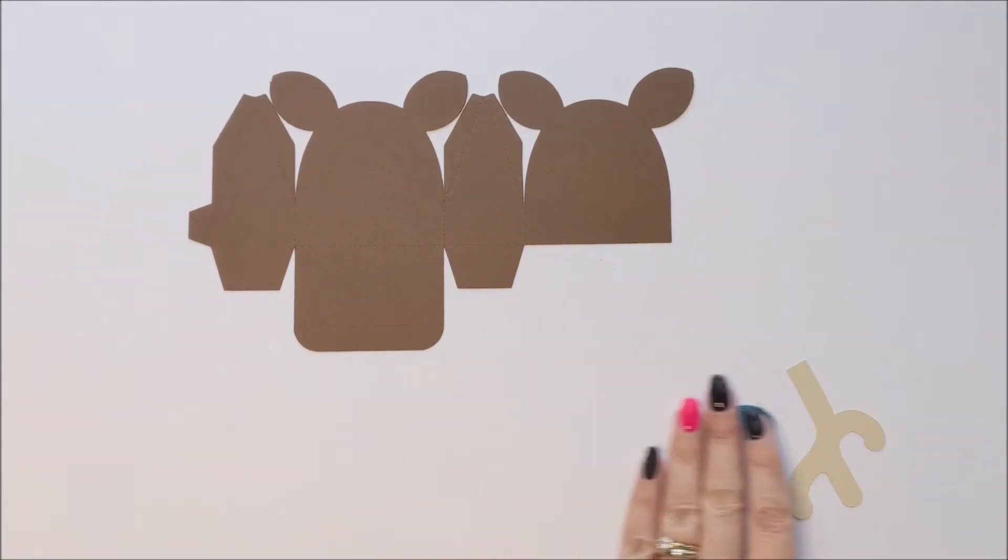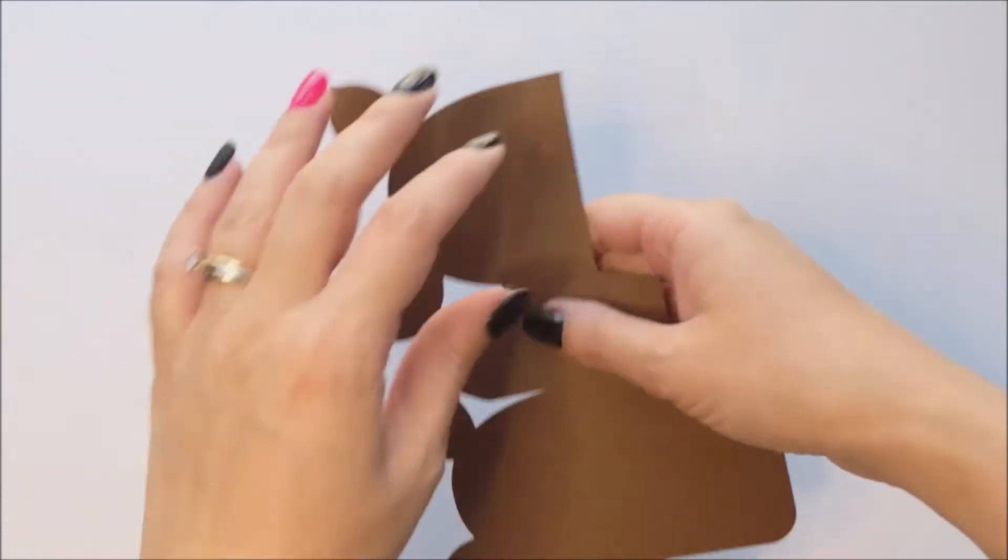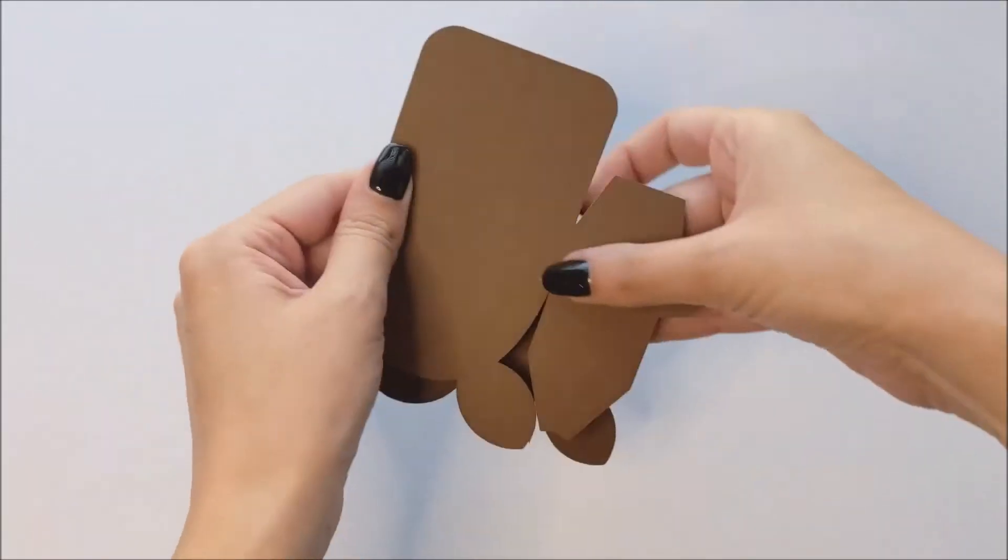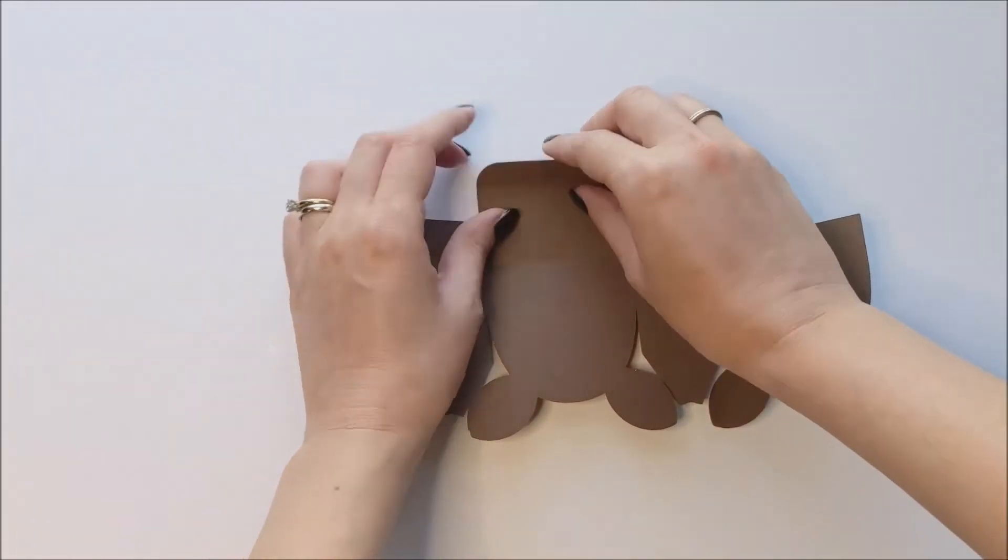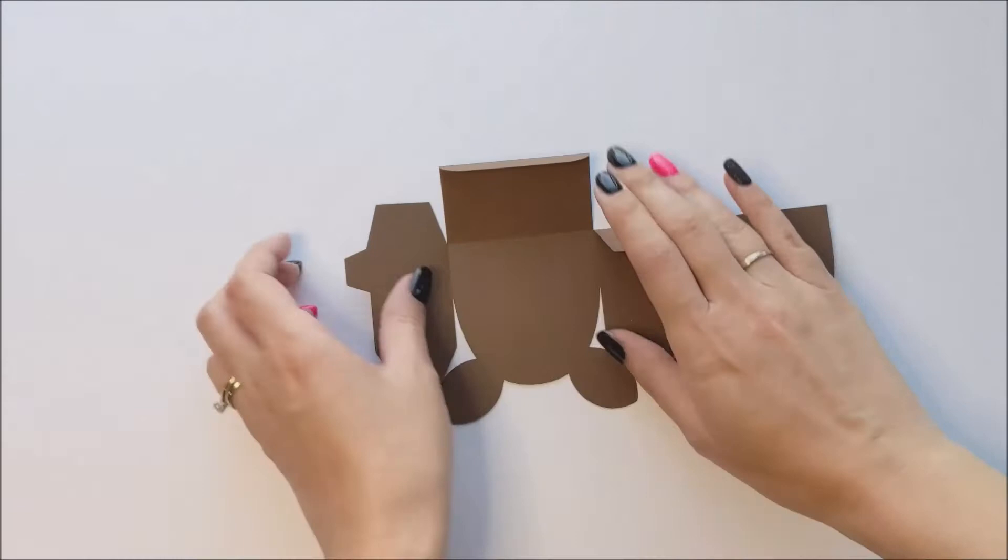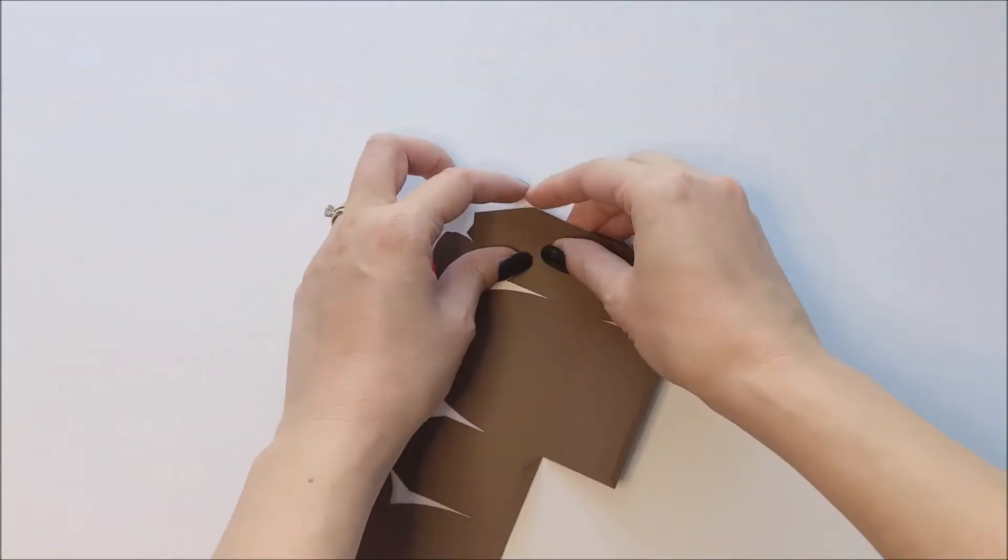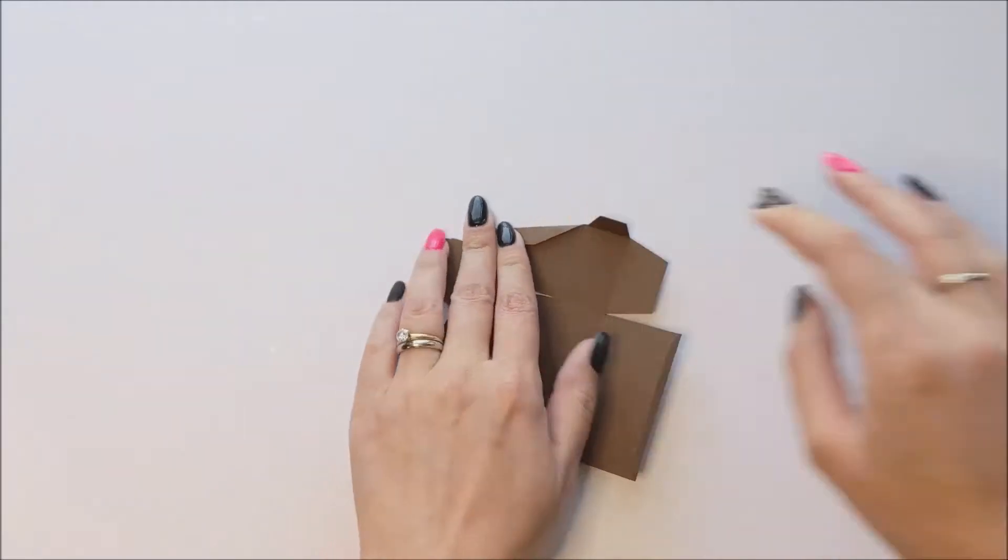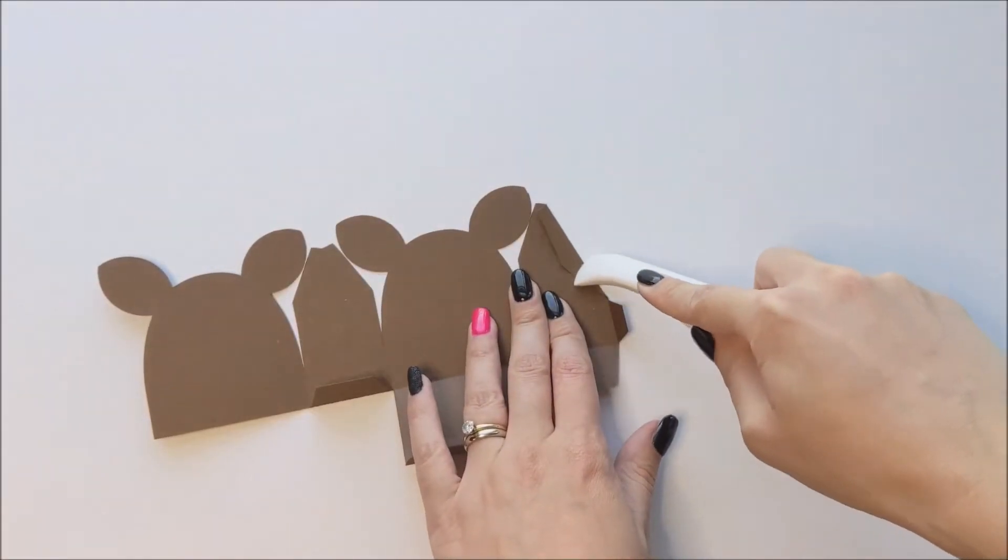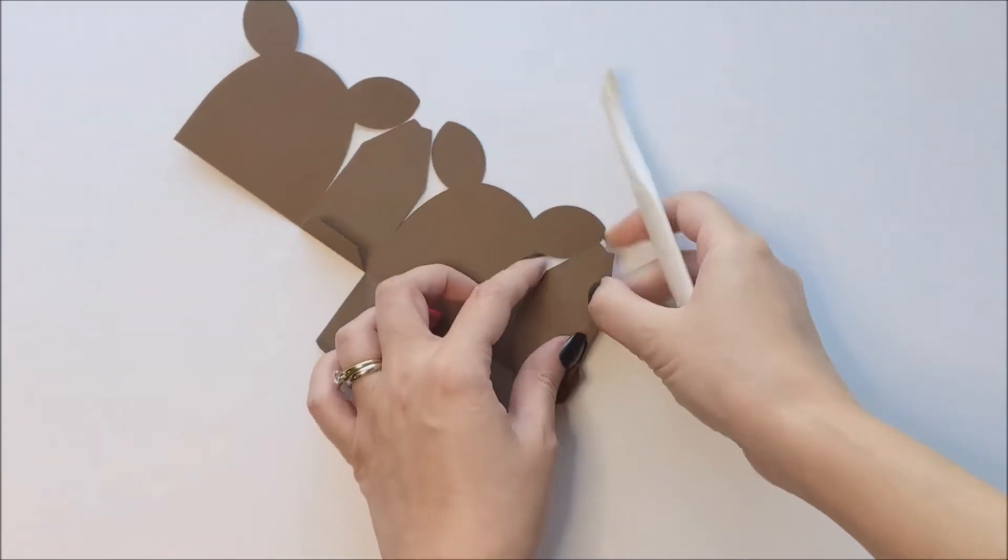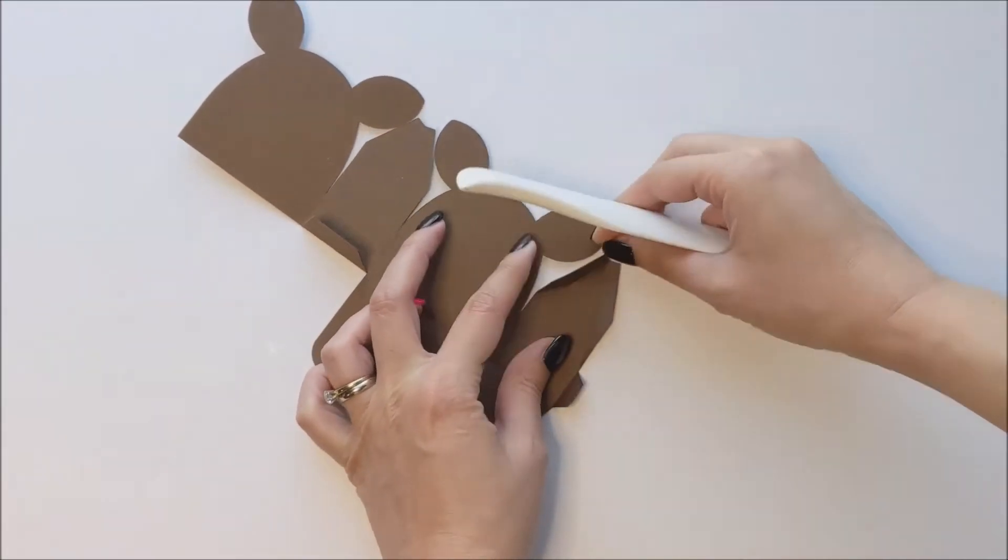We're going to start by pre-folding the box piece along the score lines. If you like, you can also use a folding tool to help fold along the score lines. This can be helpful with some of the smaller folded pieces.